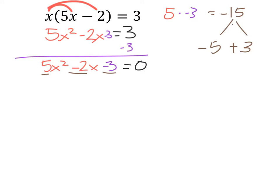factor by grouping. So we're going to rewrite this after having split up this negative 2x. So we would have had a negative 5x plus 3x, which gives us that negative 2x. And then our leading term here is 5x² minus 5x plus 3x